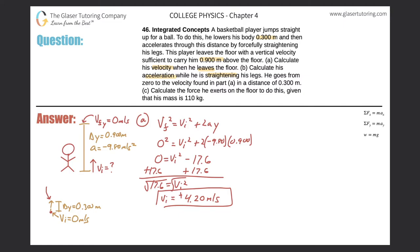At the point at which he takes off, the final velocity for this part of the problem is 4.20 meters per second — what we found in Part A. Is he in free fall here? No — he's bending and straightening his legs, not yet in the air. So we don't know his acceleration, and that's exactly what the question asks us to find. We'll use the same kinematic equation: vf² = vi² + 2aΔy.